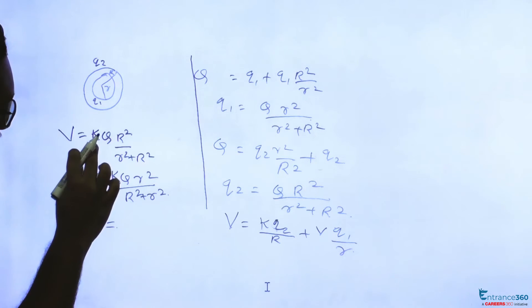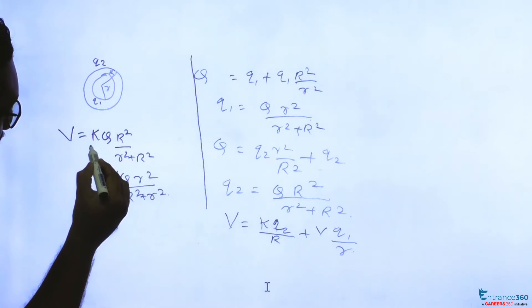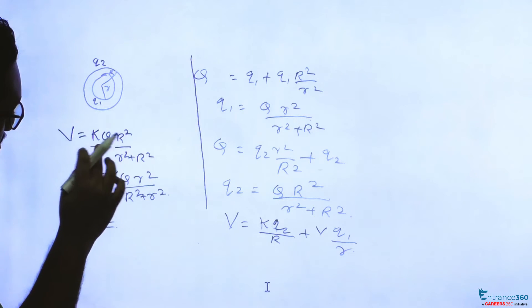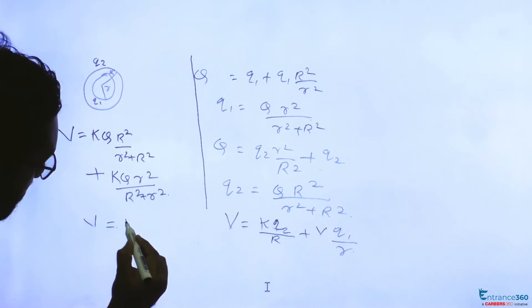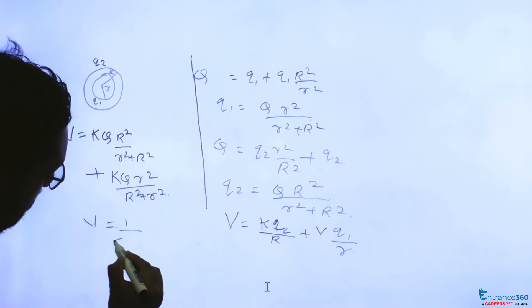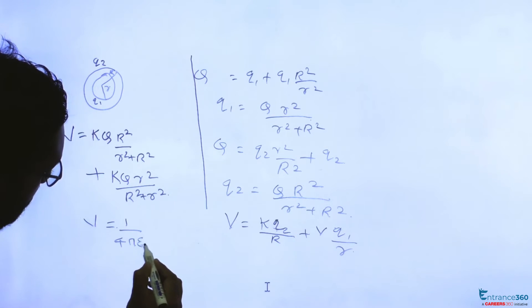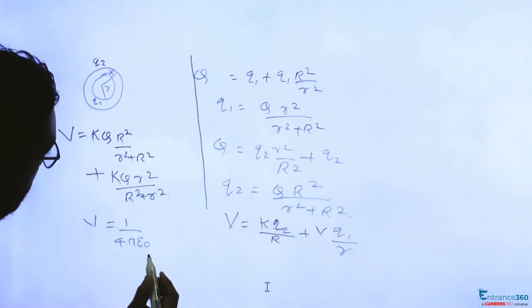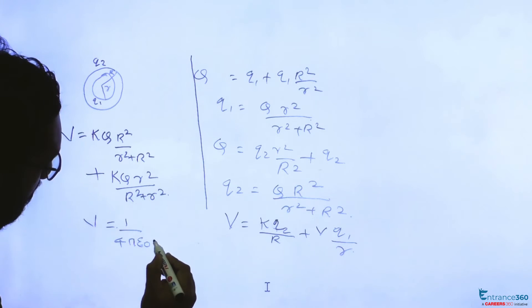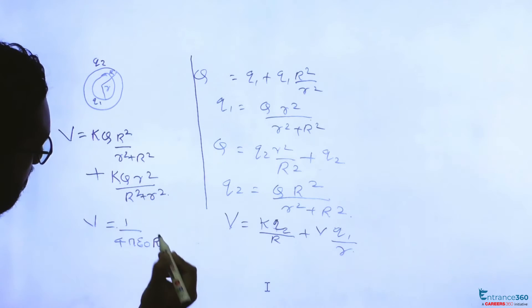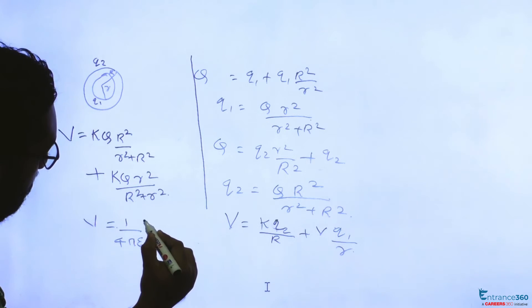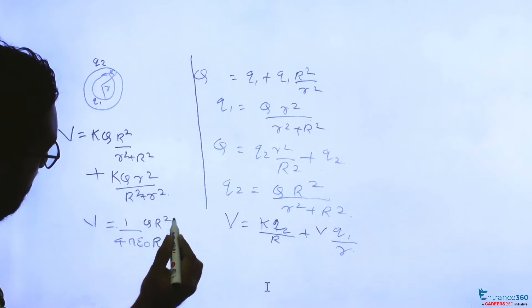Here K is 1 by 4πε₀. We can rewrite with K = 1 by 4πε₀, giving us the expression in terms of ε₀.